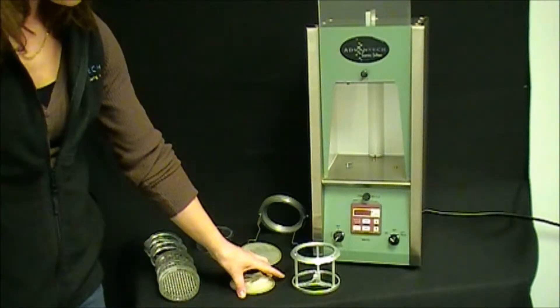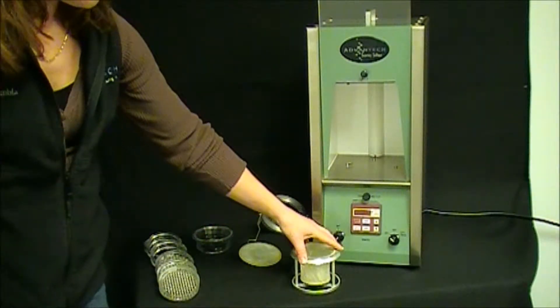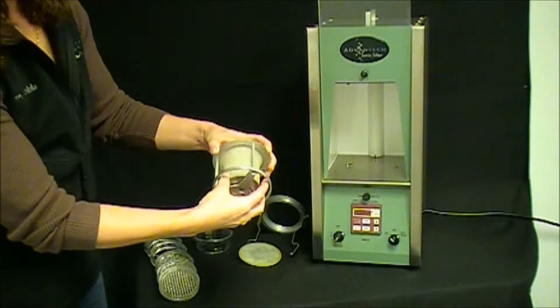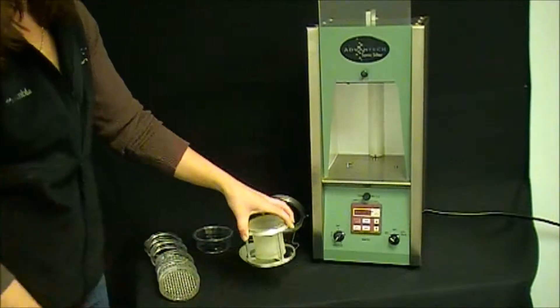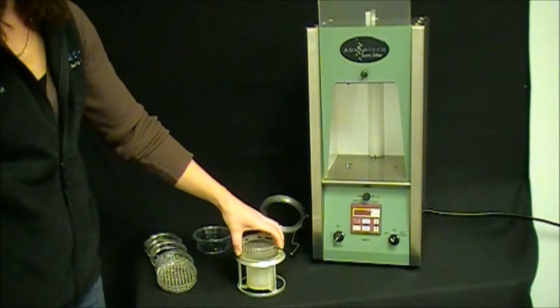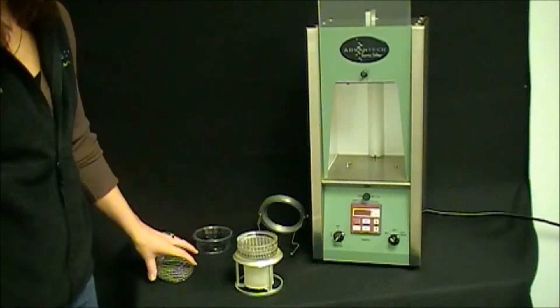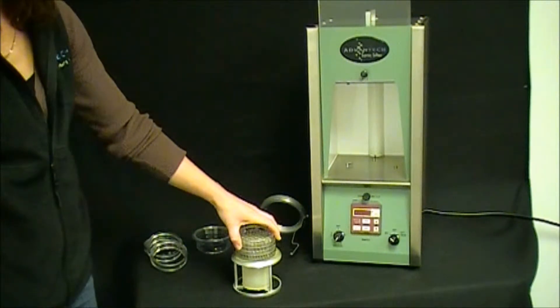You'll start by taking your fines collector and locking it into the fines collector holder and then build your test stack starting with your finest sieve at the bottom and arranging the test sieves incrementally coarser toward the top.